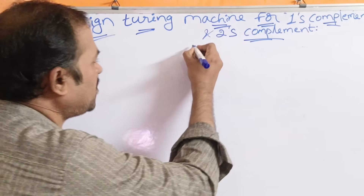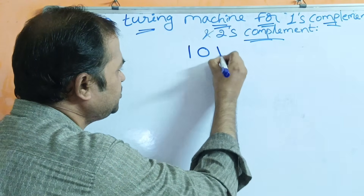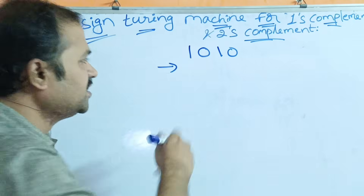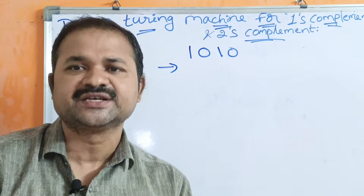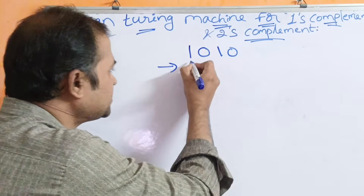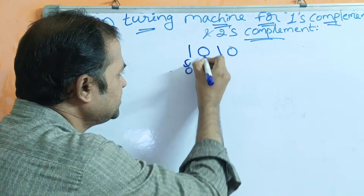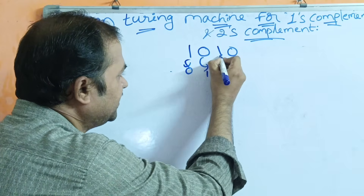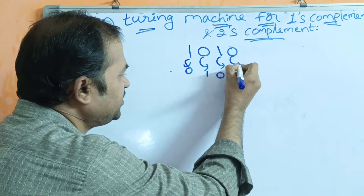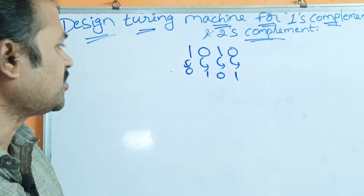We know what 1's complement is. If we have a number like 1 0 1 0, 1's complement means 1's are converted to 0's and 0's are converted to 1's. So this 1 will be converted to 0, this 0 will be converted to 1, this 1 will be converted to 0, and this 0 will be converted to 1. So this is the logic here.